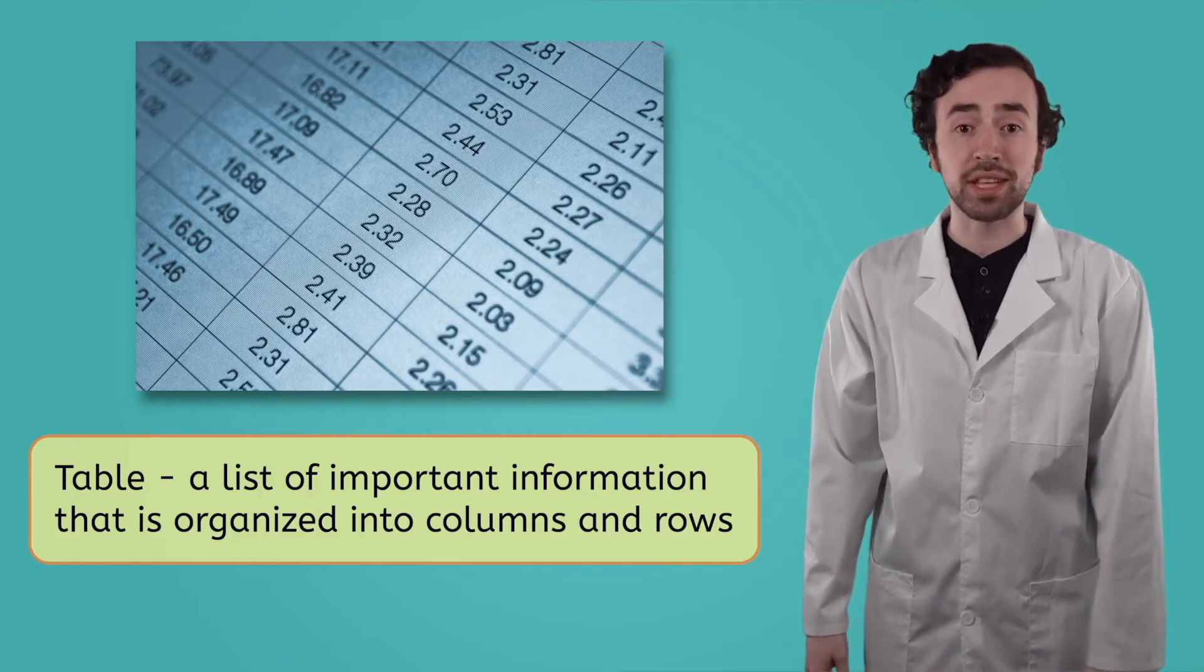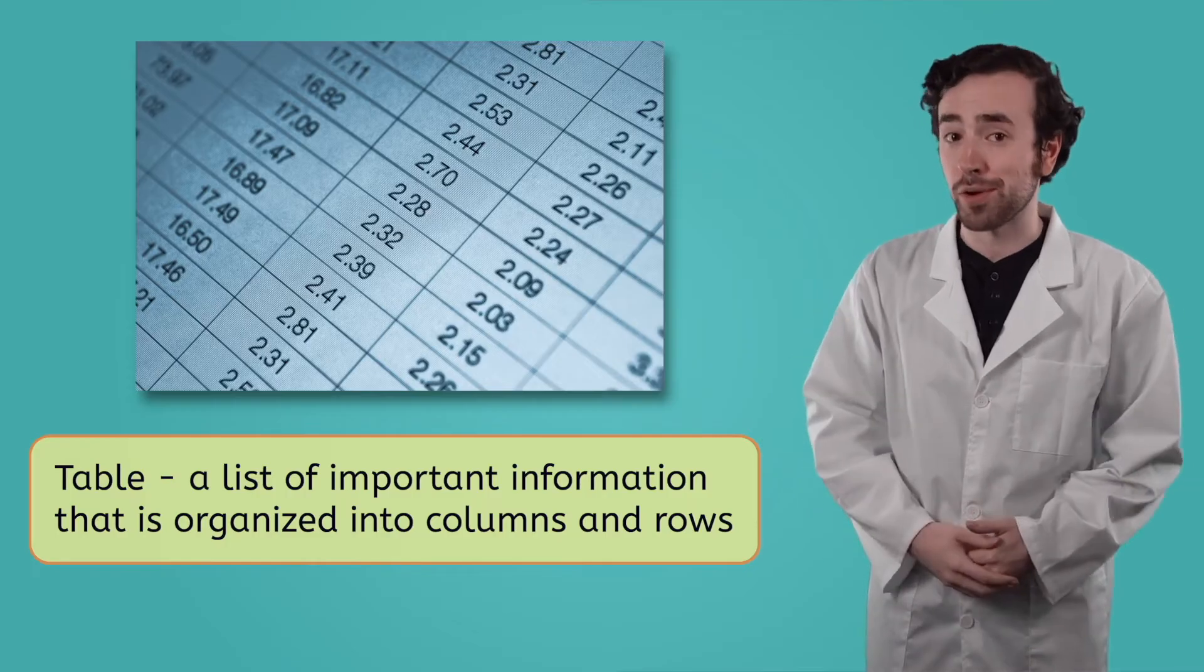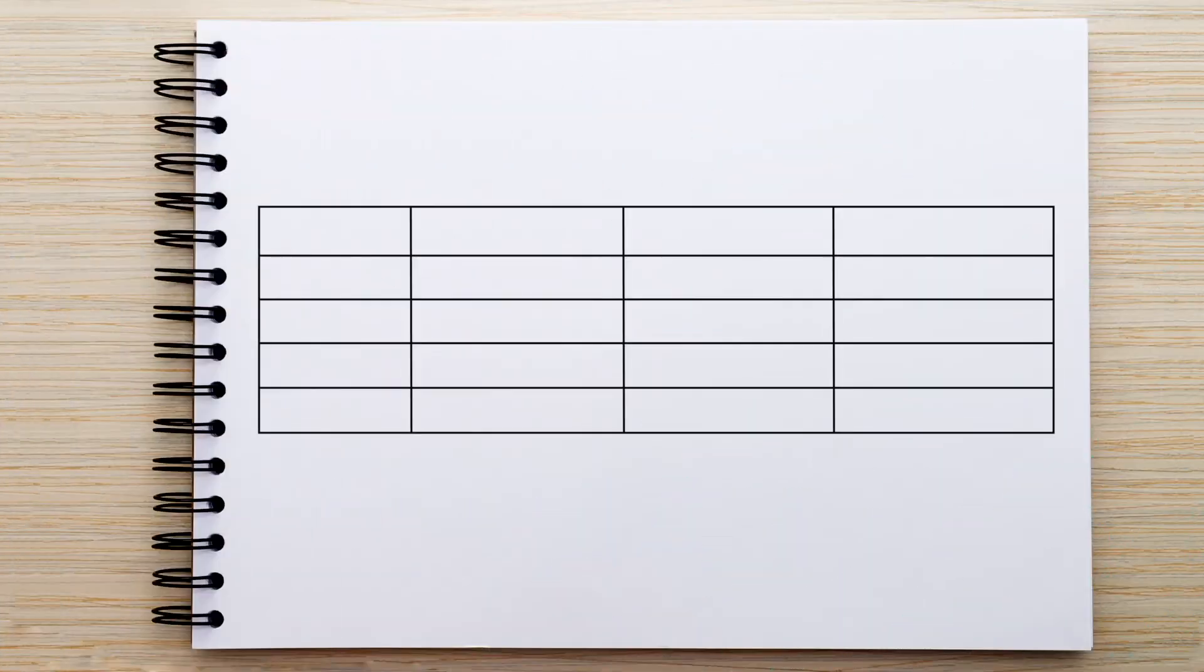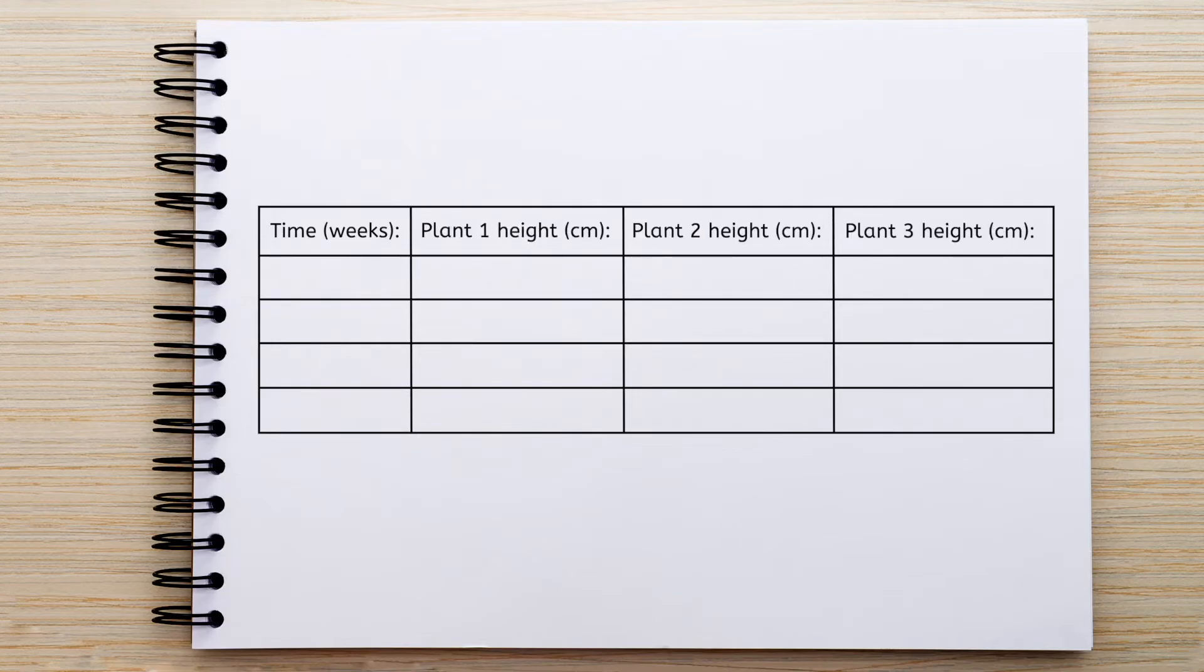Let's create a table for the data that I've been collecting about my strawberry plants. We'll need a column for time, or the number of weeks since the seeds were planted, and a column for the height of each plant. Notice how I've included units in my table as well. Now to add the actual data. Okay, we're getting somewhere.